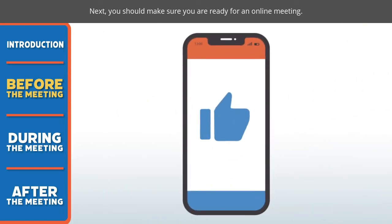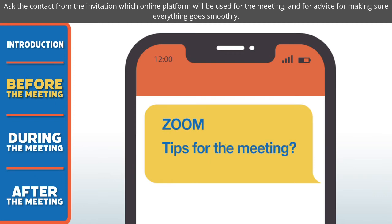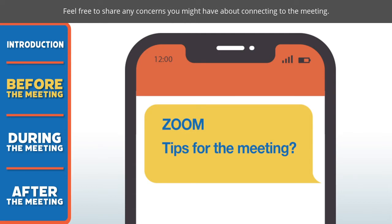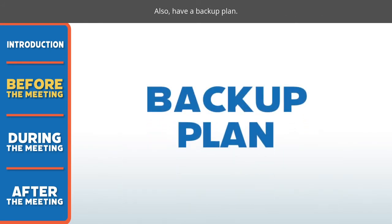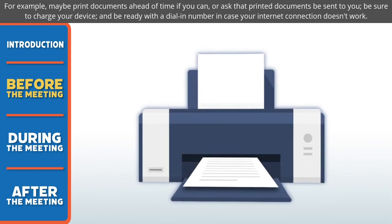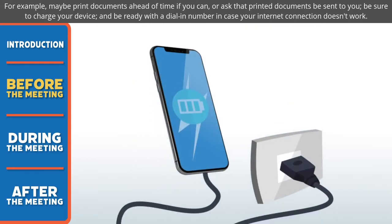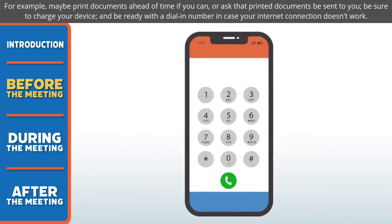Next, you should make sure you are ready for an online meeting. Ask the contact from the invitation which online platform will be used for the meeting, and for advice for making sure everything goes smoothly. Feel free to share any concerns you might have about connecting to the meeting. Also, have a backup plan. For example, maybe print the documents ahead of time if you can, or ask that printed documents be sent to you. Be sure to charge your device and be ready with a dial-in number in case your internet connection doesn't work.